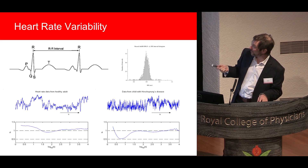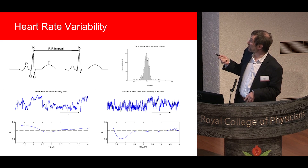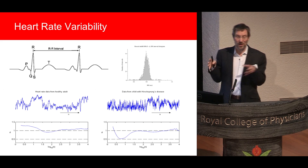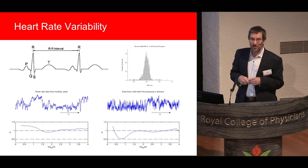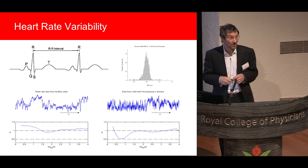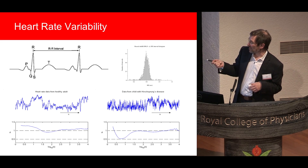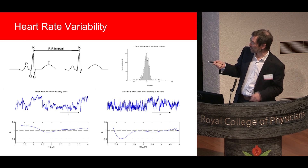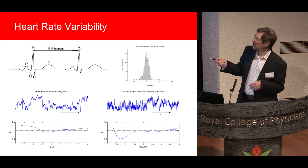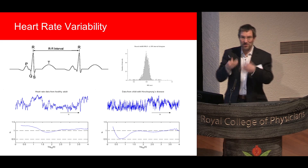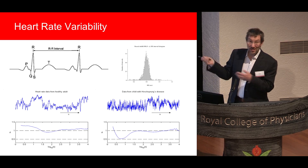If you take the RR interval and plot it as a time series, data from a healthy adult looks quite different from data taken from a child with Hirschsprung's disease — a condition where the gut isn't properly innervated, leading to chronic constipation. The clinician wondered if other parts of the autonomic nervous system were similarly affected. Using a technique looking at the fractality of these signals, you can see a significant dip in the child's data compared to the flat line of the adult.